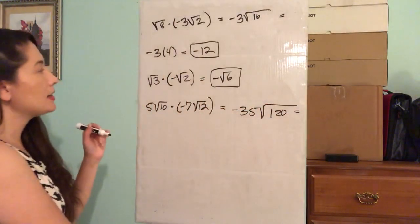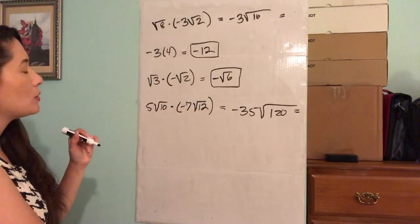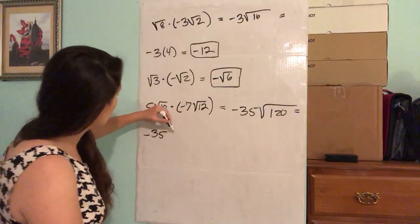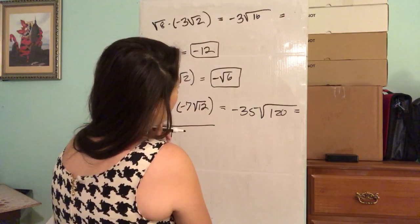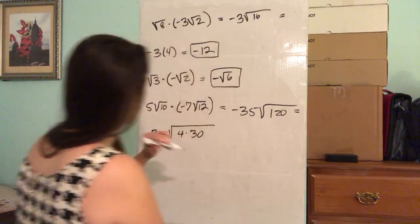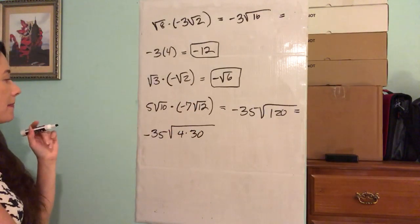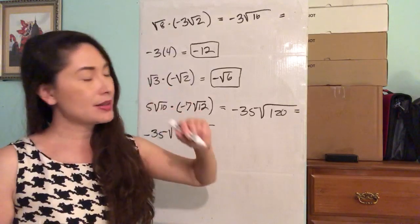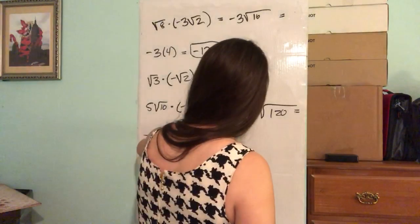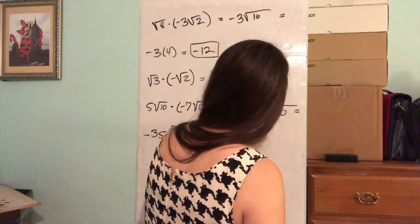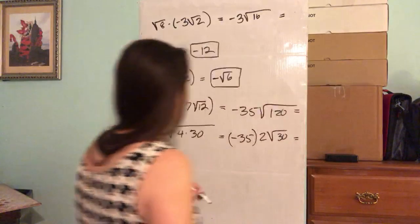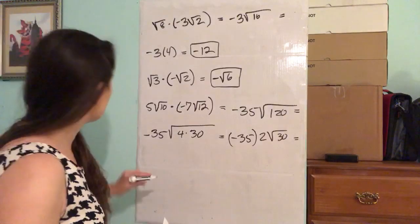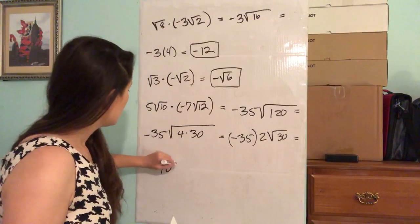Can we break down 120? How about four times 30 — four times 30 gives you 120. What's the square root of four? Square root of four is two, so we can take out the square root of four and make it two. So this is going to be negative 35 times two times the square root of 30. Negative 35 times two is going to be negative 70 times the square root of 30.